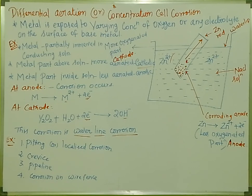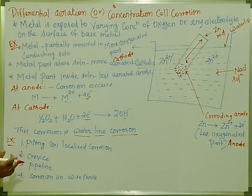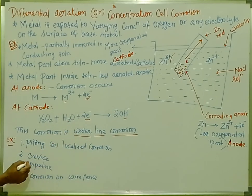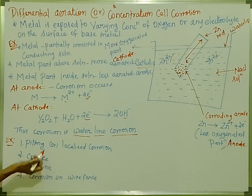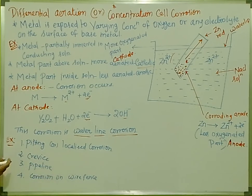There are four examples of differential aeration corrosion: pitting or localized corrosion, crevice corrosion, pipeline corrosion, and corrosion on a wire fence. All these examples will be explained in separate videos.